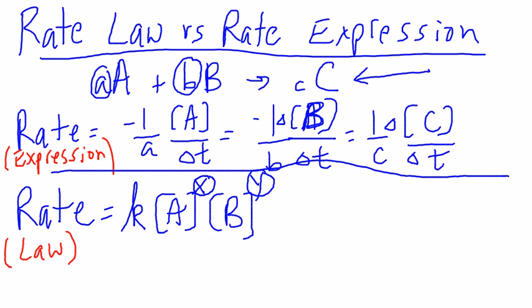These numbers must be derived experimentally. What the difference between these two is, is this first expression, the rate expression, really is just, tells us that we can follow any particular reactant or product to determine the overall rate of the reaction.